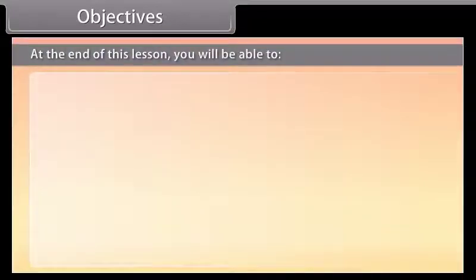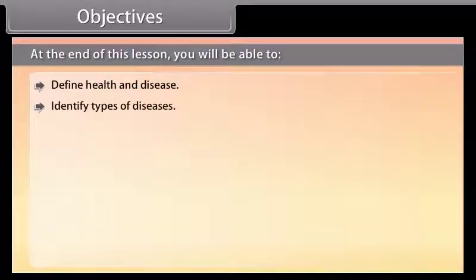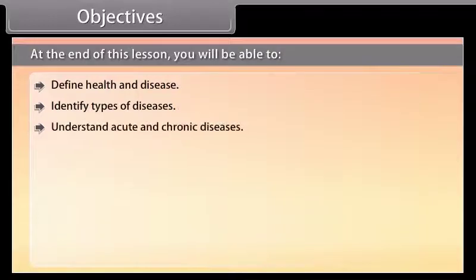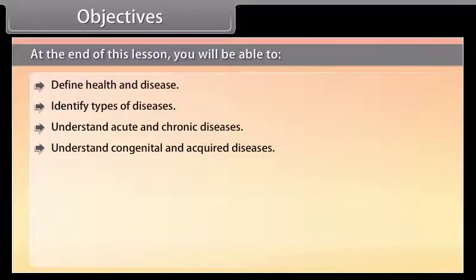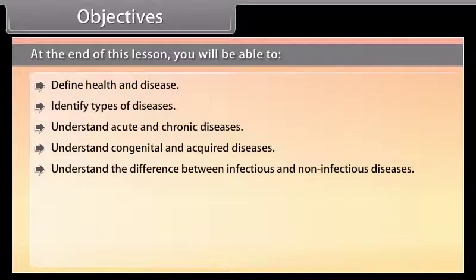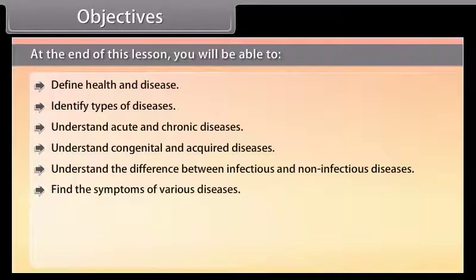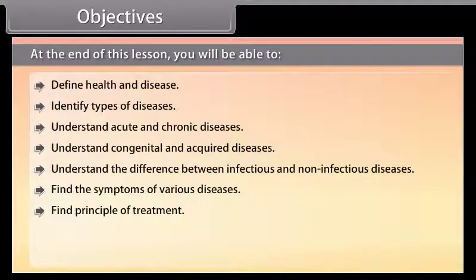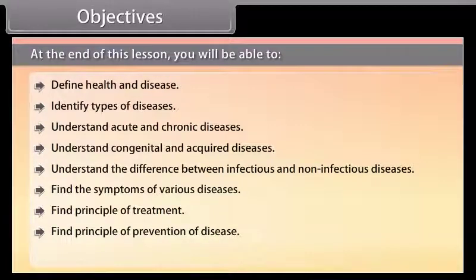At the end of this lesson, you will be able to: define health and disease; identify types of diseases; understand acute and chronic diseases; understand congenital and acquired diseases; understand the difference between infectious and non-infectious diseases; find the symptoms of various diseases; find the principle of treatment; find the principle of prevention of disease; and understand vaccination.